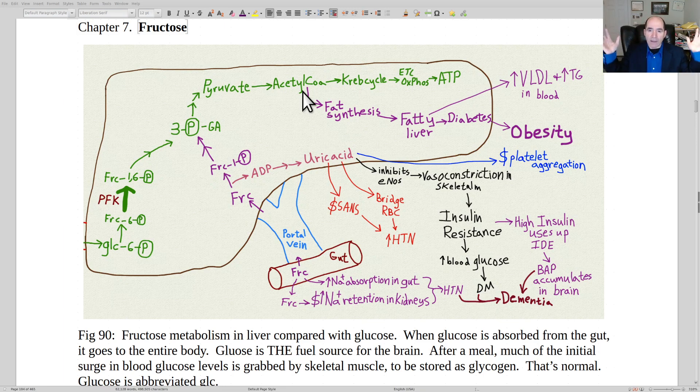The liver basically says, I don't need to burn this for energy right now. Just store it as fat. That's why ingesting these high fructose corn syrup sweetened energy drinks, they are very prone to producing a fatty liver.